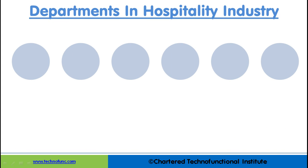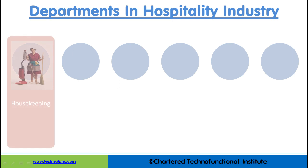Let us understand the different departments that run the entire hospitality industry — these are the pillars on which the concept of hospitality stands. Housekeeping: This department is responsible for cleaning and maintaining hotel premises, which include public areas, guest rooms, lobby, swimming pool area, etc. Generally this department is not visible to the guest.